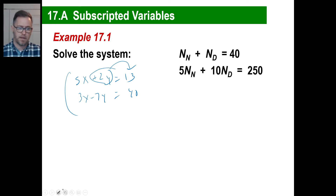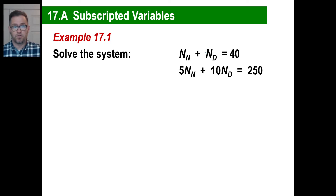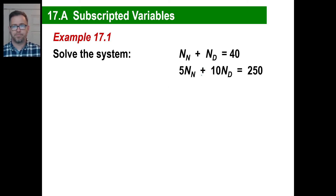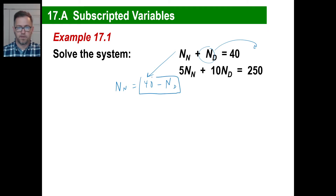Don't let it intimidate you. You're going to treat this exactly like you would any couple of variables. What you can do is use substitution — plop one expression over there and substitute. Or you could multiply the entire top equation by 5 and then eliminate. Either way is fine. Let's just use substitution since it might be a little easier. So n sub n equals — and that gets plopped over there — 40 minus n sub d. That's our new value for n sub n.